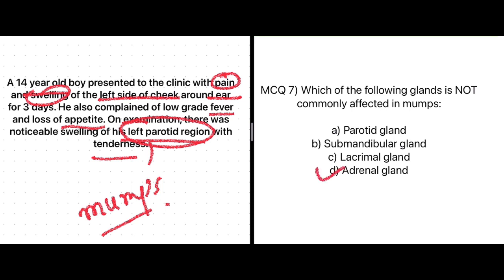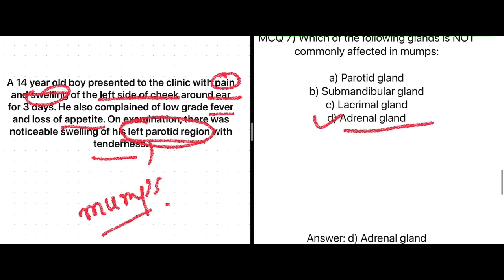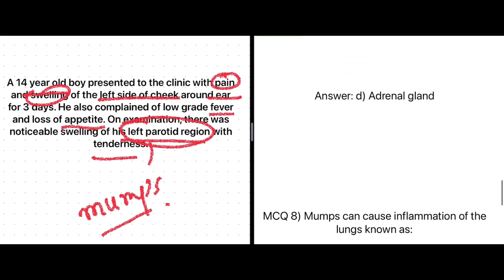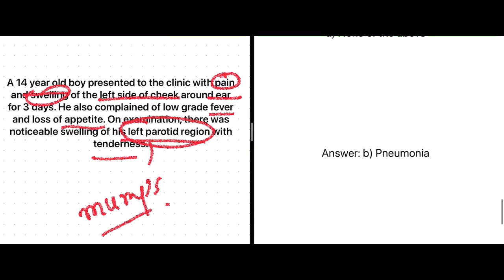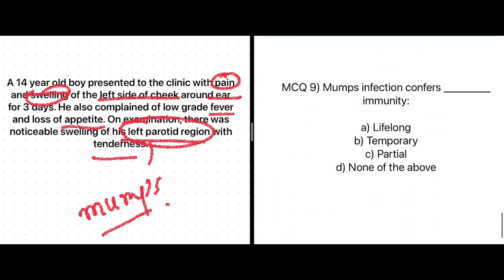The adrenal gland is not commonly affected in mumps. Mumps can cause inflammation of the lungs known as: pleurisy, pneumonia, bronchitis, or none of the above? The answer is pneumonia — mumps infection can cause pneumonia.